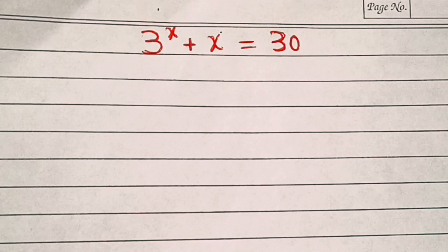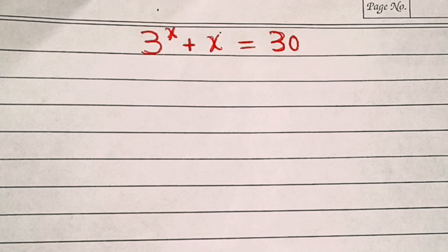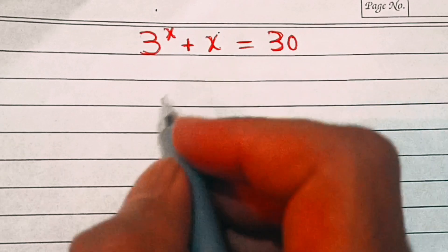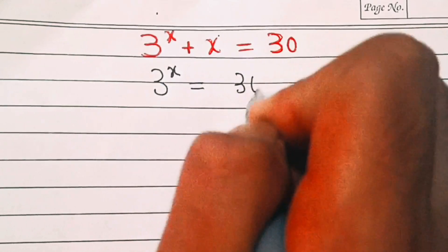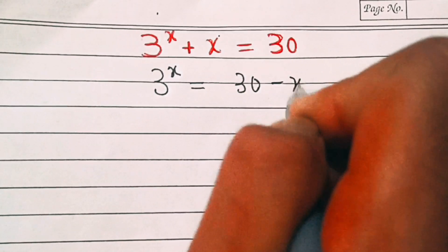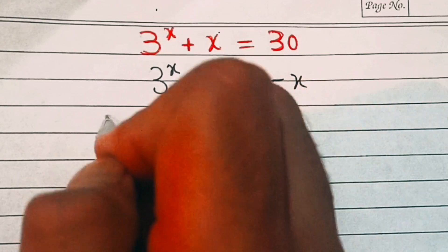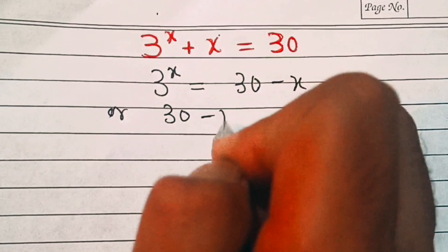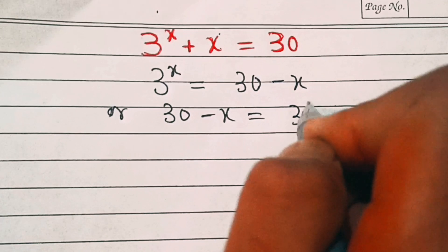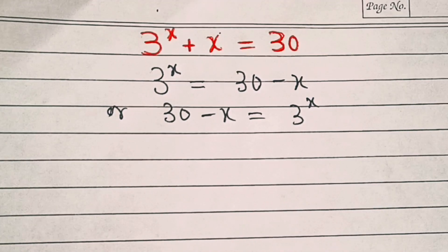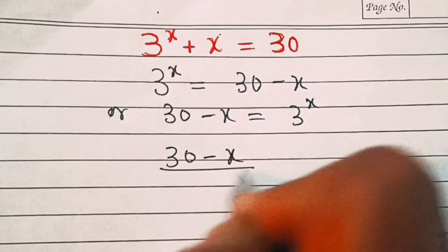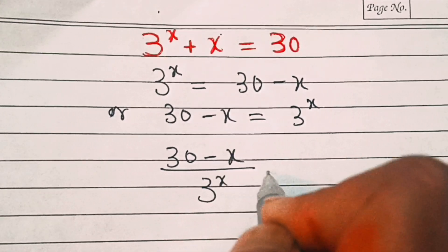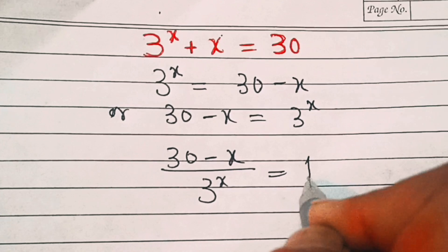In the first step we'll subtract x from both sides. So we'll get 3 power x equal to 30 minus x. Or we can write 30 minus x equal to 3 power x. Now divide both sides by 3 power x. We'll get 30 minus x divided by 3 power x equal to 1.